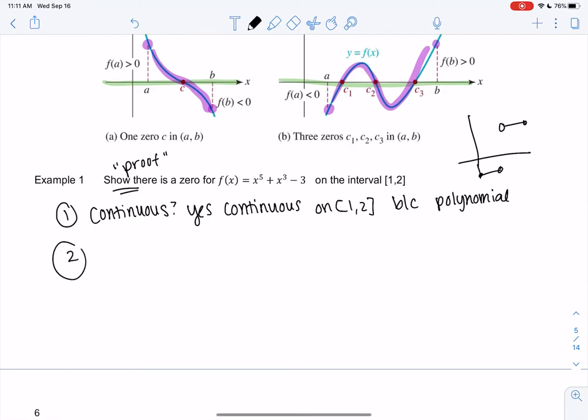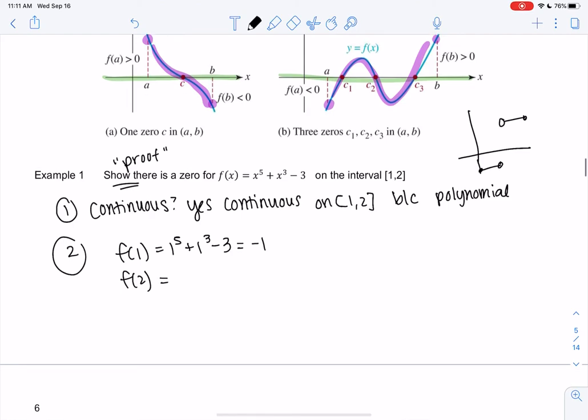And so then two, then we'll find the values at each endpoint, f(1) and f(2). So f(1) will be 1^5 + 1^3 - 3, which is -1. And then f(2) is, who knows, some big number. 2^5—what's that, 32—plus 2^3 is 8, minus 3, so 40 - 3 is 37.